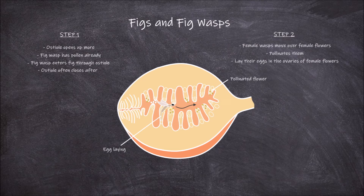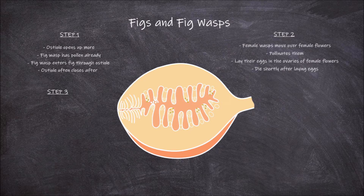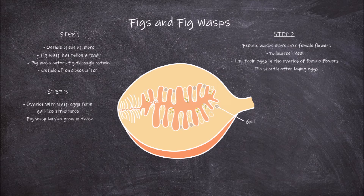These female wasps die shortly after laying their eggs. The third step involves the ovaries with wasp eggs in them forming gall-like structures. The fig wasp larvae grow in these galls. The female flowers that got pollinated form seeds within the ovaries.